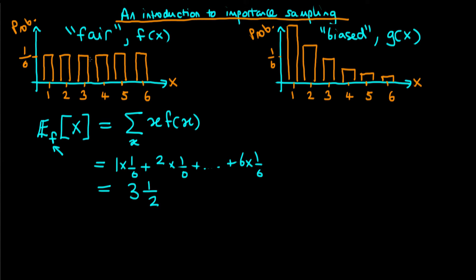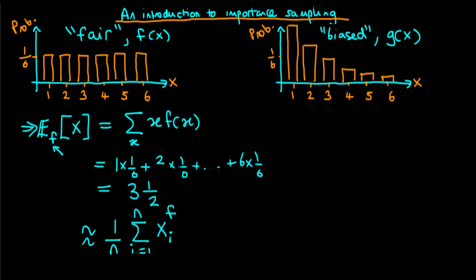But what happens if we didn't actually have this distribution to hand — for example if the die was in a box and we couldn't see it? We could still estimate its mean by shaking the die and observing the result each time. We'd replace the population mean by the sample equivalent: one over n times the sum from i equals one to n of x_i, where x_i is drawn from f, and n is the number of throws.